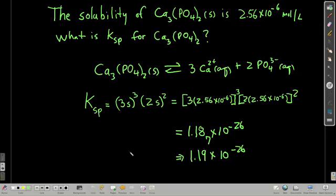We can go the other way though. If we know the solubility of a compound, we can calculate Ksp. So let's say we know that the solubility of calcium phosphate in water at 25 Celsius is 2.56 times 10 to the minus 6 moles per liter. What's Ksp? Well, this is the equilibrium expression.